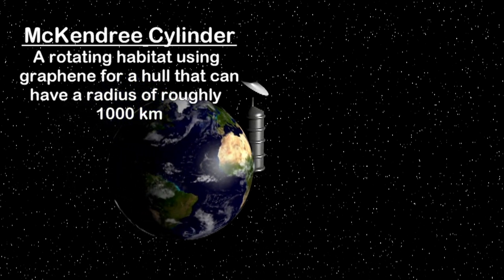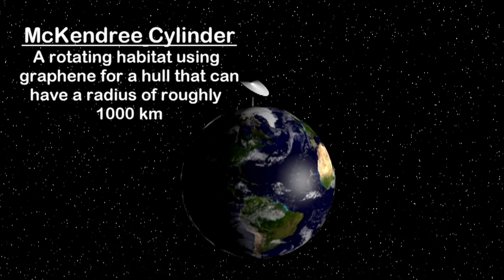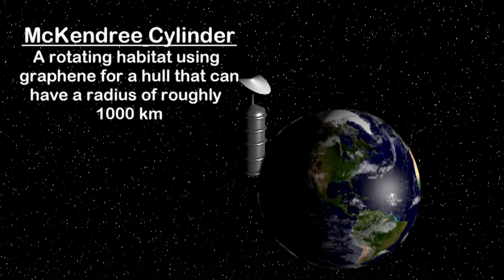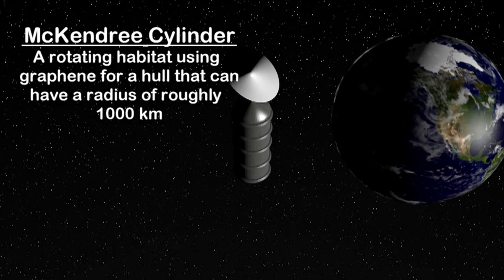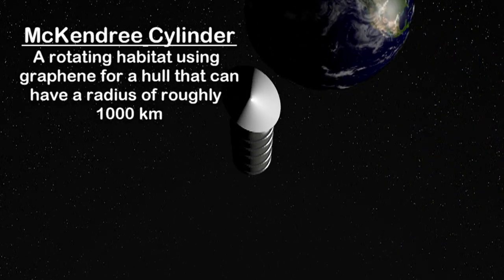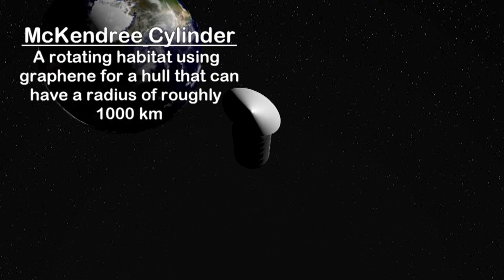Obviously if you can bulk produce high-quality graphene it lets you make much bigger habitats, and carbon, what graphene is made of, is a lot more plentiful than iron or titanium, the two things we usually envision making rotating habitats from.